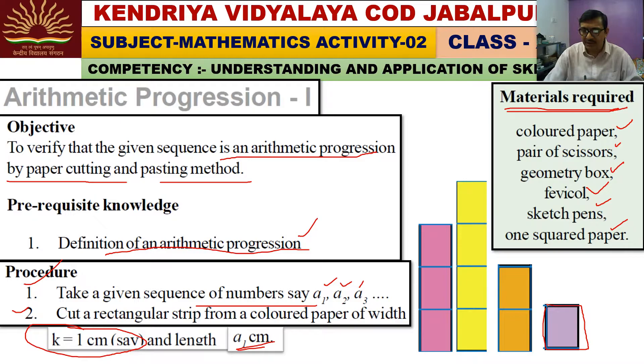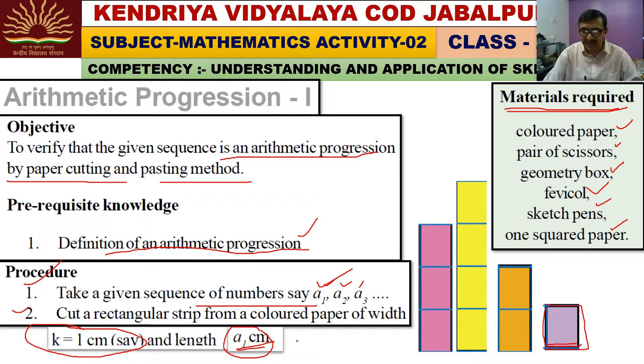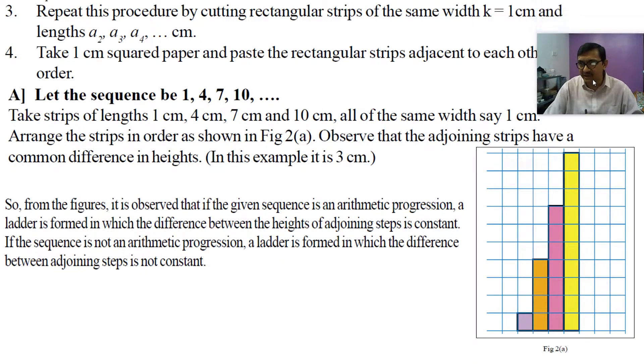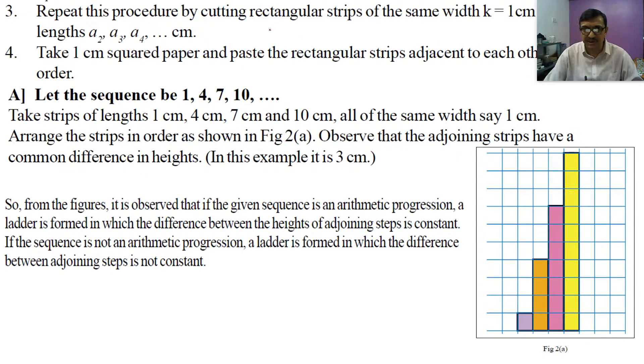If you have squared paper, there is no problem. You will cut a rectangular strip from it. The width will be one unit or one centimeter constant. The a1 refers to the first number in the sequence given. Third point: Repeat this procedure by cutting rectangular strips of same width 1 cm and length a2, a3, a4 centimeters. The width should remain constant.